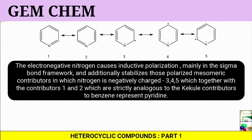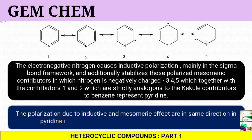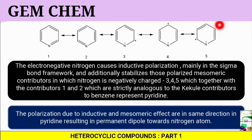Here we can see both inductive effect as well as mesomeric effect. Altogether, the polarization due to inductive and mesomeric effect is occurring in the same direction. As a result, there is a permanent dipole moment starting from the upper portion towards the nitrogen atom.